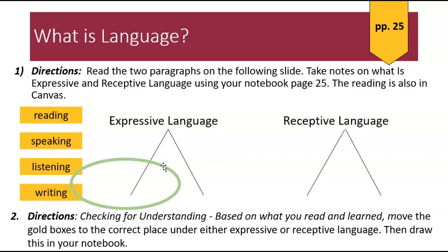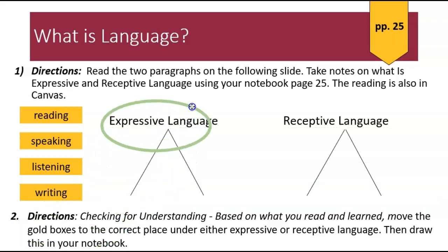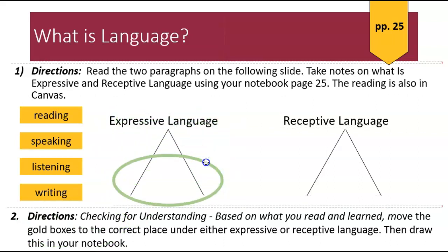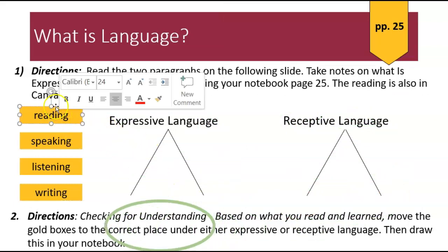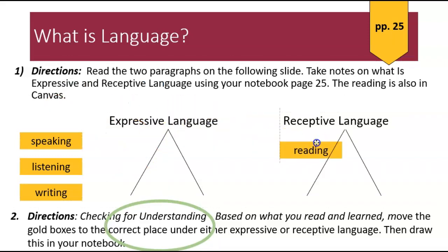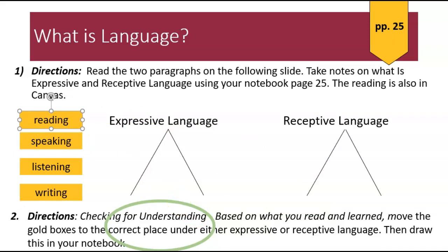Now that you've finished reading, we're going to check to see if you understand the concepts. Down at the bottom, you're going to be drawing these — or if you printed the tab, they're already there — and then you're going to move them over. Where is reading? Is it expressive or receptive? Put them under the correct category. This will show you that reading, speaking, listening, and writing are really what the ELA standards are all about. These are the major components of the ELA standards.